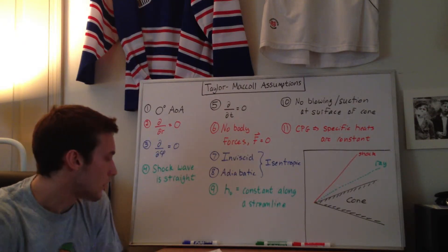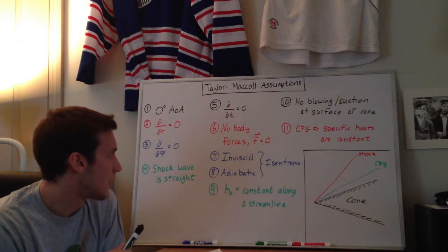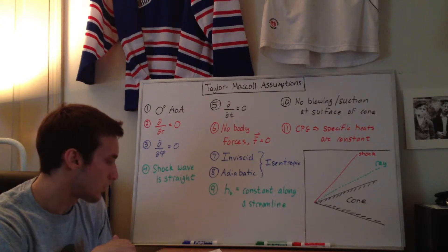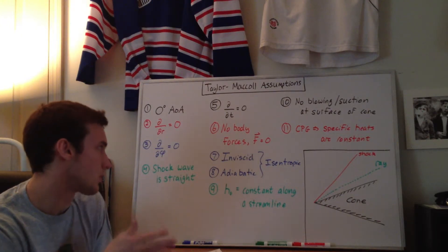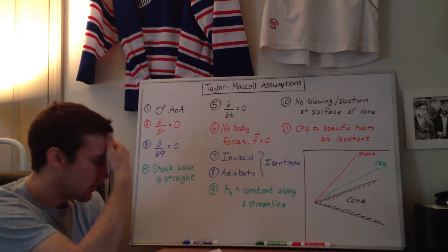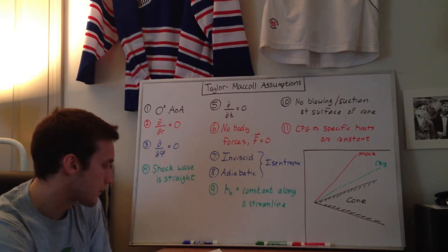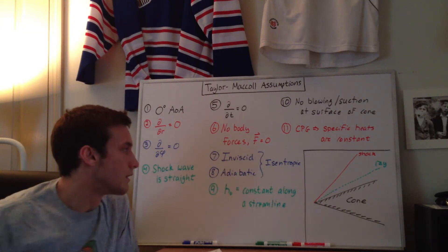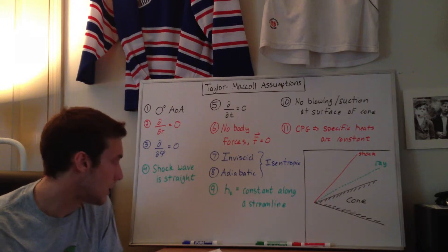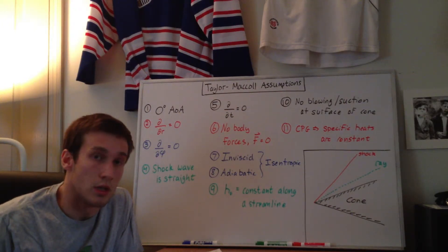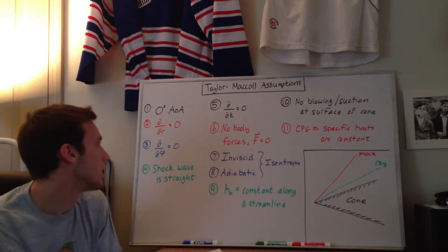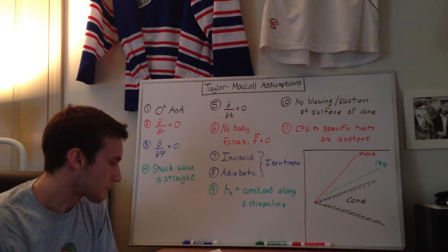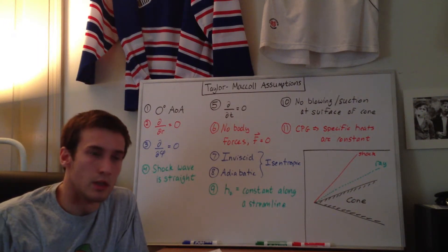Assumptions seven and eight are linked together. Inviscid flow means we're assuming there's no frictional effect on the flow, and this allows for the use of Euler's equation. The adiabatic assumption is that there's no heat added to or taken away from the system. Both of these together give us the isentropic assumption. The isentropic assumption comes into play with Crocco's theorem, and it also relates to the straight shock assumption, because you end up having a gradient of entropy in that equation.